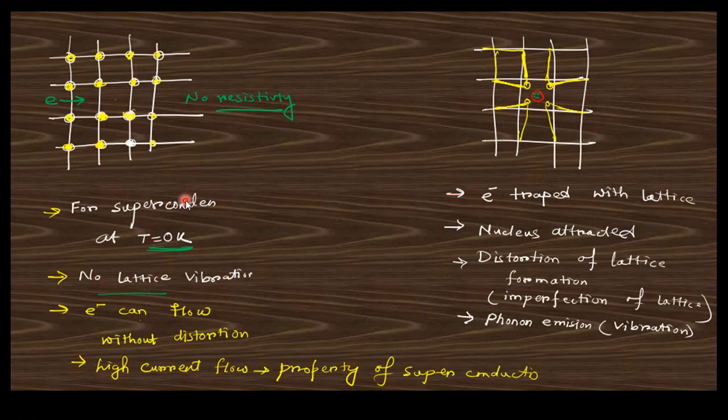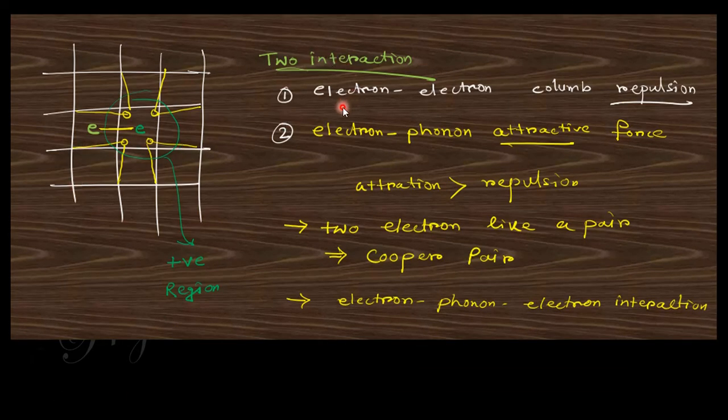Actually, when the temperature is 0 Kelvin, there is no lattice vibration. The lattice points are fixed here and electrons can easily pass through this path because there is no vibration, so no resistivity. But at higher temperature, electrons can be trapped and the ions are attracted here, so there is distortion of lattice and phonon emission. This vibration creates emission which is known as phonon. So here two interactions can happen: electron-electron repulsion when another electron comes here, this repulsion happens, and electron-phonon, that is the vibration of this lattice plane causing attraction. This attraction is greater than repulsion, so these two electrons form a pair.